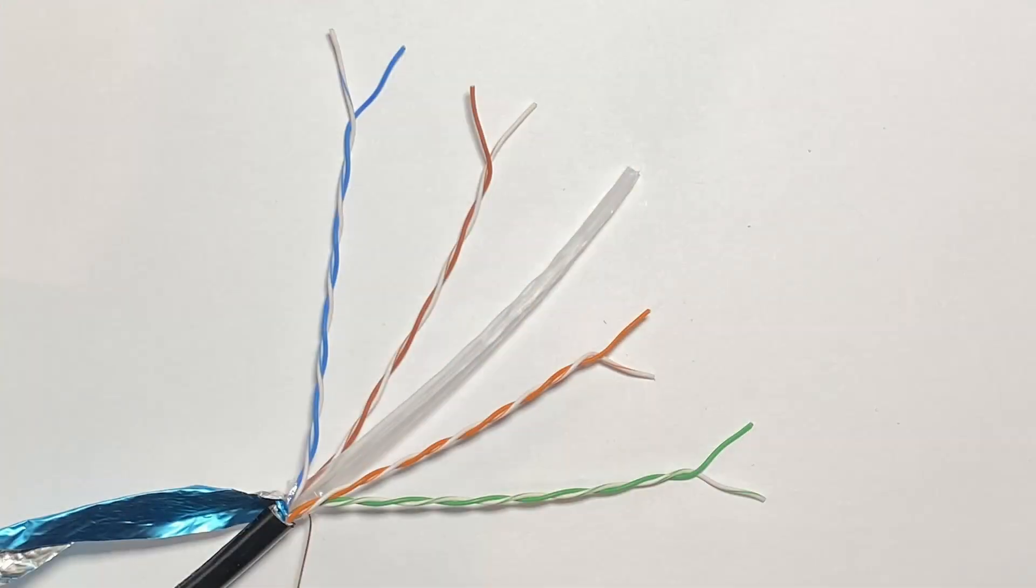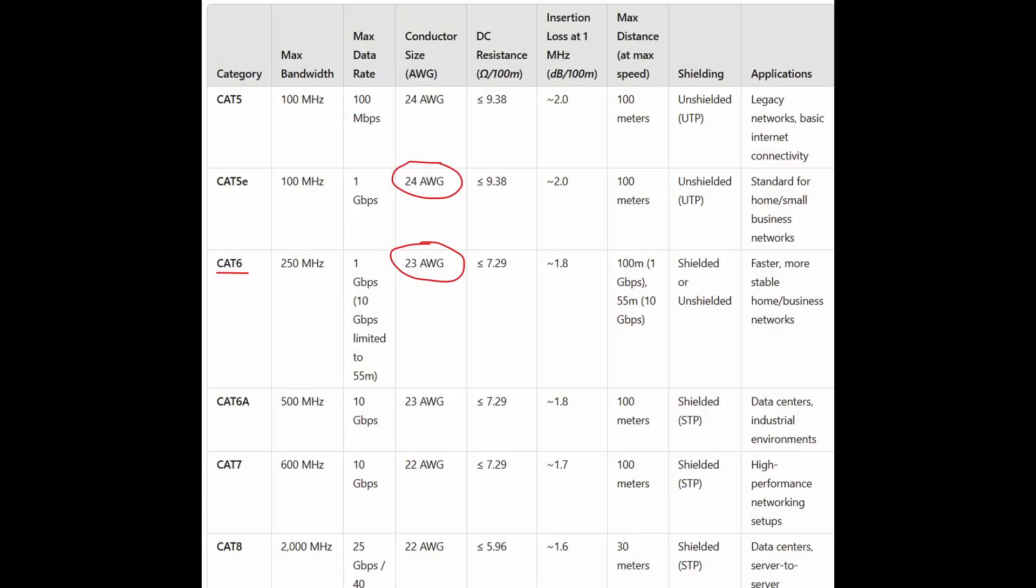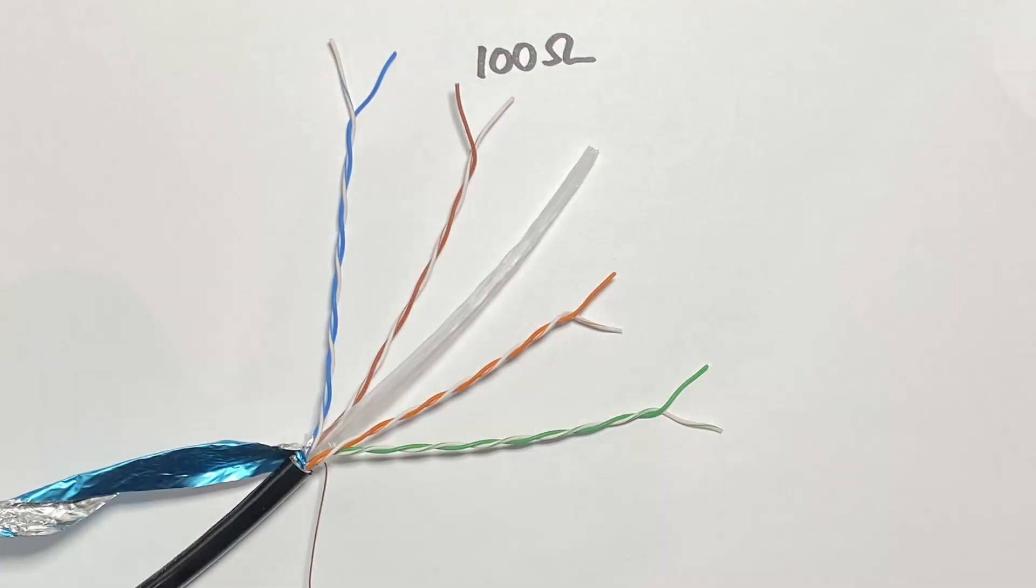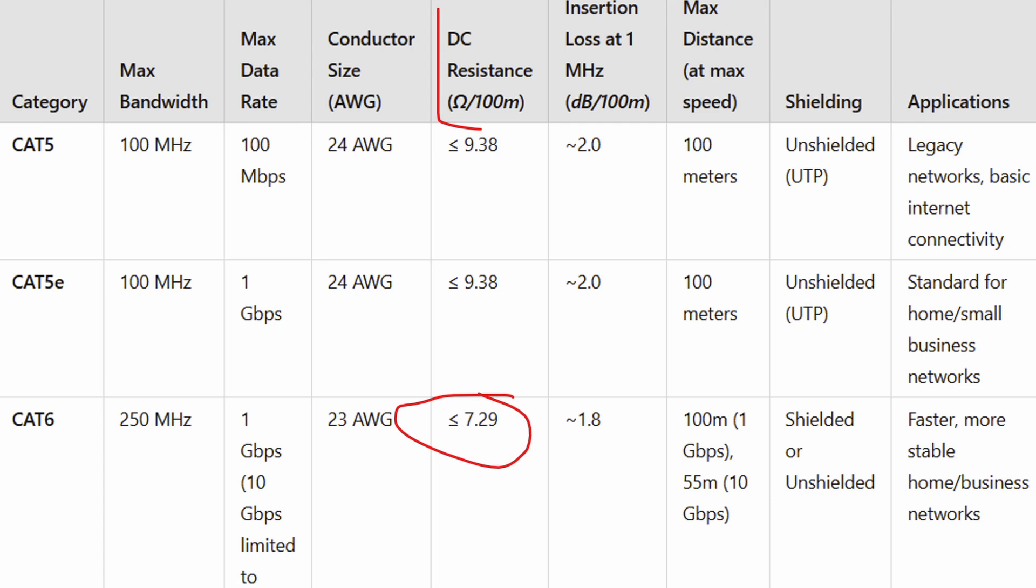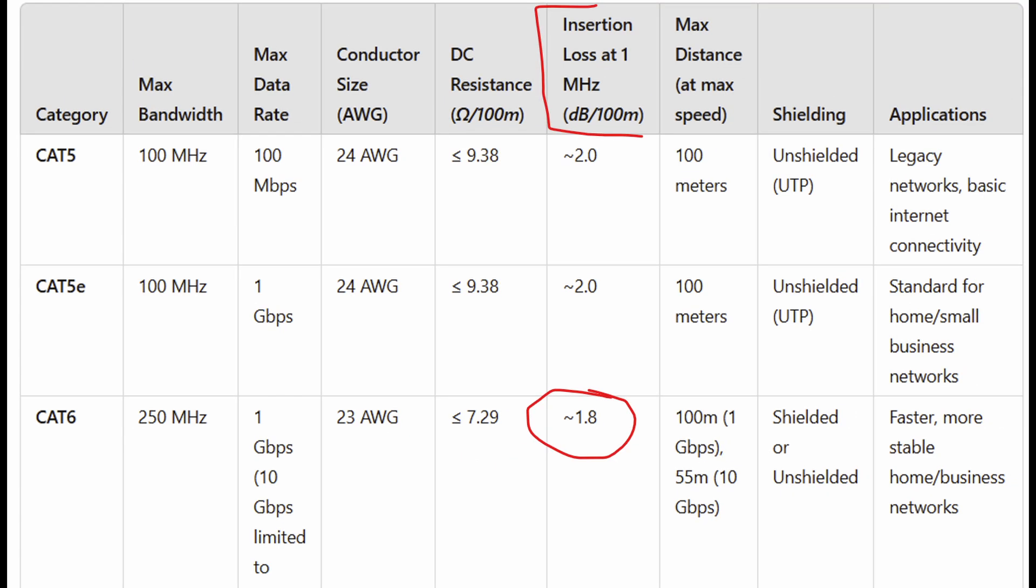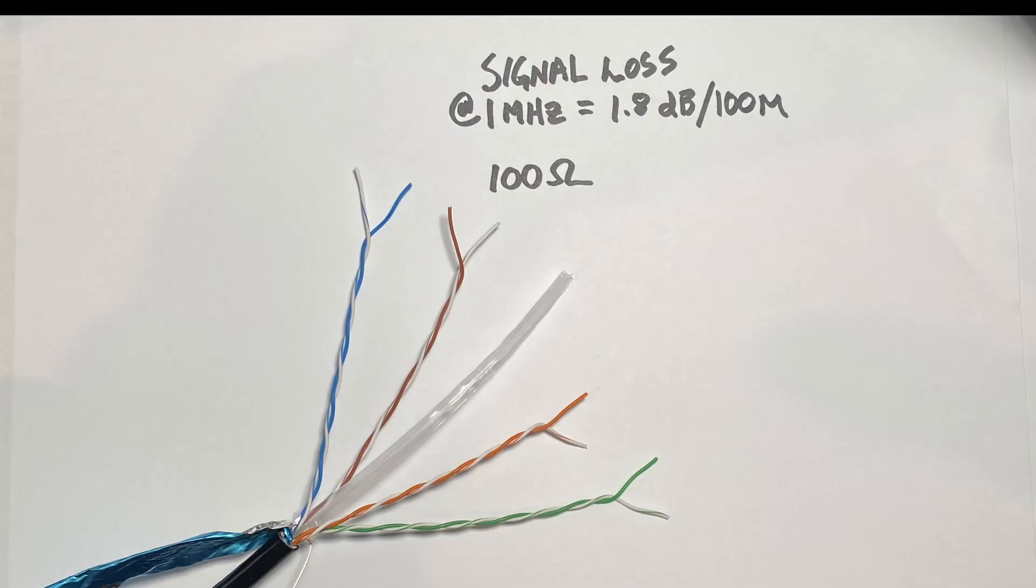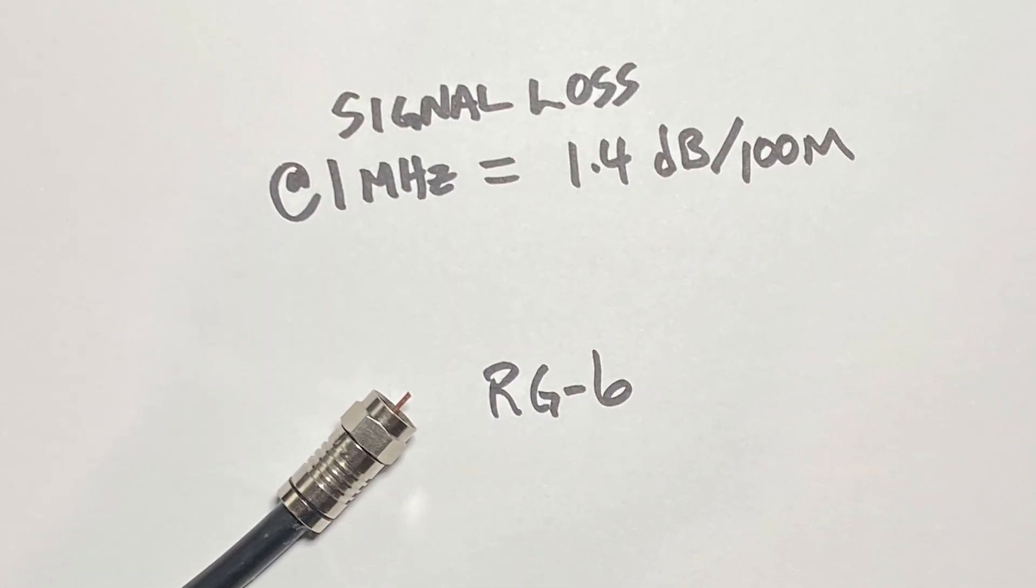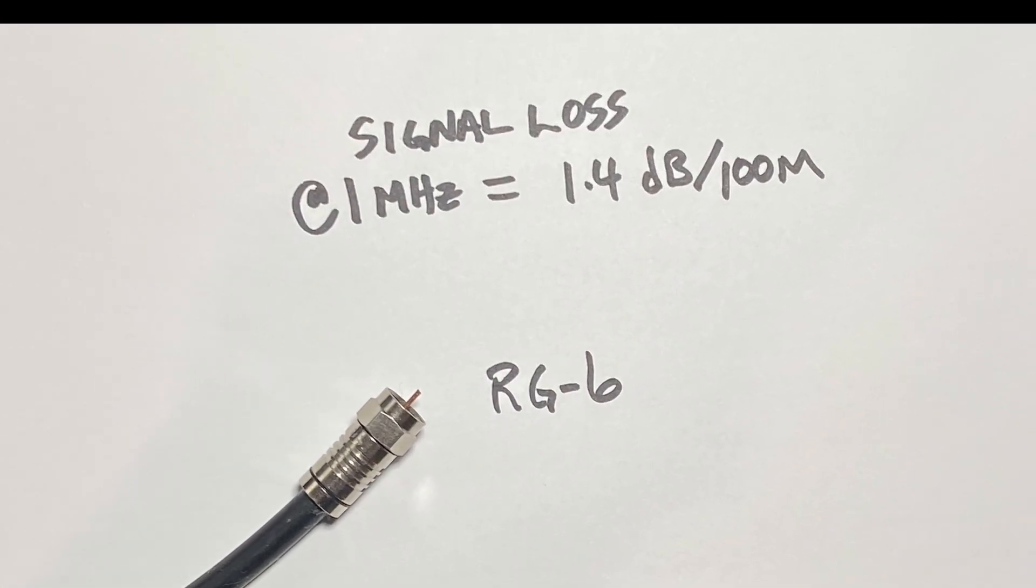CAT5 or 6 cable is usually four twisted pairs of 23 or 24 gauge copper wire. That's eight conductors. Each CAT6 twisted pair has a characteristic impedance of about 100 ohms, DC resistance of 7 to 8 ohms per 100 meters, and RF loss of 1.8 dB per 100 meters at 1 megahertz. For comparison, RG6 is about a half dB less at 1.4 dB loss per 100 meters.